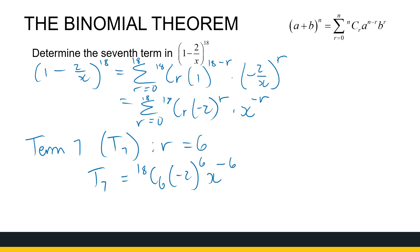And again, this is a very big number. So if you want to leave it like that you can, or you can calculate that. It's 1,188,696 x to the power −6, or 1 over x to the power 6.